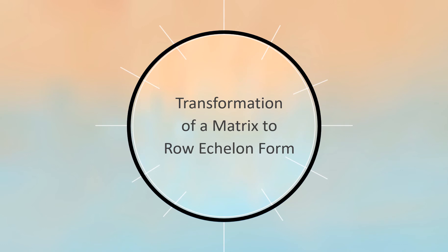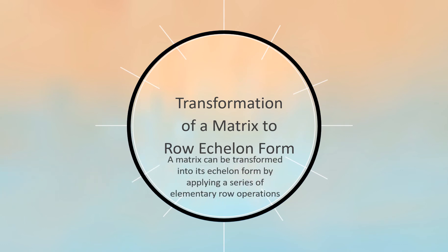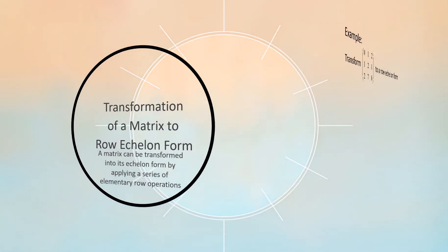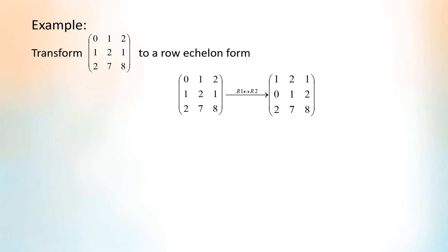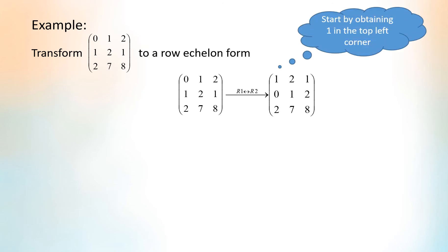To reduce a matrix into row echelon form, we can apply a series of elementary row operations. Let's look at the following example: transform the given matrix to row echelon form. First, we interchange row 1 and row 2 so that the top left-hand corner is 1. Then we multiply each element in row 1 by negative 2 and add the product to row 3 to produce a new row 3. Next, we multiply each element of row 2 by negative 3 and add to row 3 to produce a new row 3.